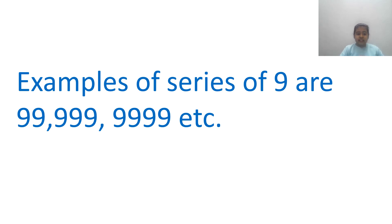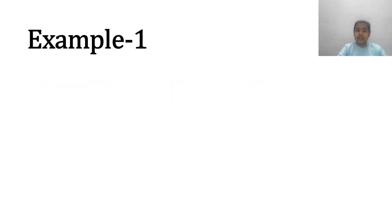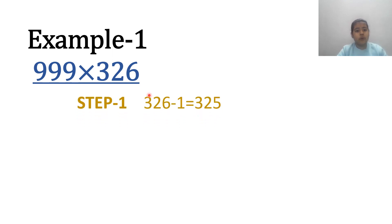You will better understand with an example. Let us consider a number 326. Suppose we want to multiply it by 999. In order to solve this, first of all subtract 1 from 326. We get 325.